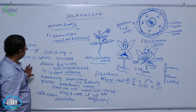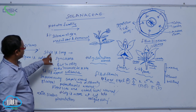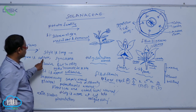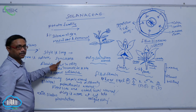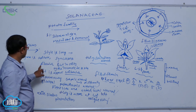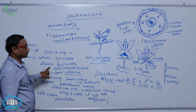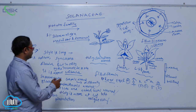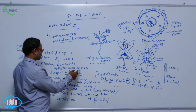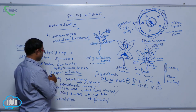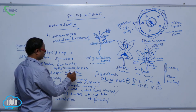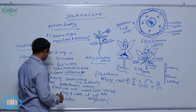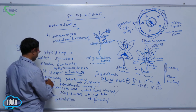So, in this gynoecium, the style is long, stigma is capitate, ovary is syncarpous and bilocular, but in Chili, by the incomplete septa, it appears unilocular — and it is a superior ovary.